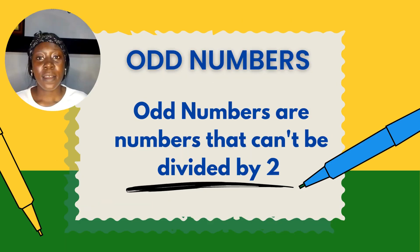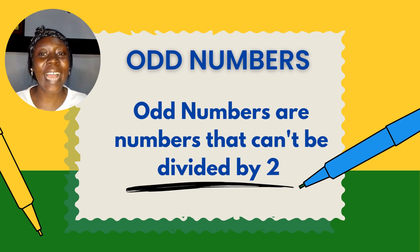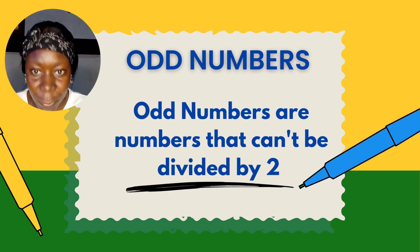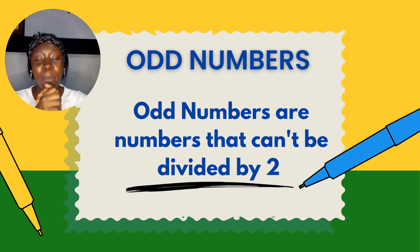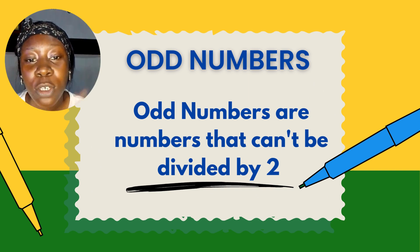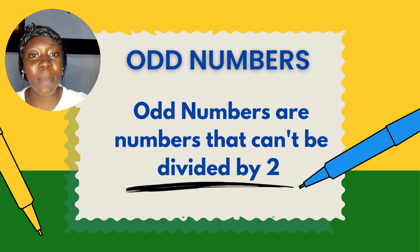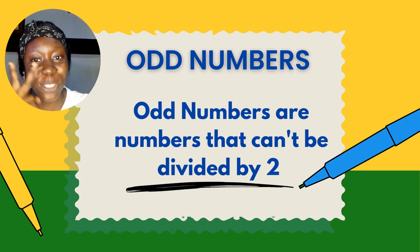So let's move on to the next slide. Odd numbers are numbers that can't be divided by two. Any number that can't be divided by two, they are called odd numbers. So don't forget, odd numbers are numbers that can't be divided by two.